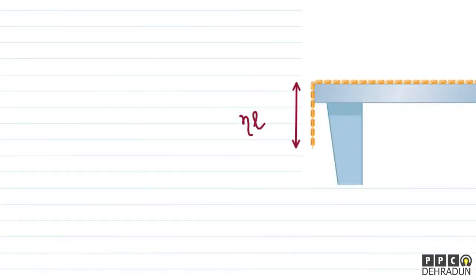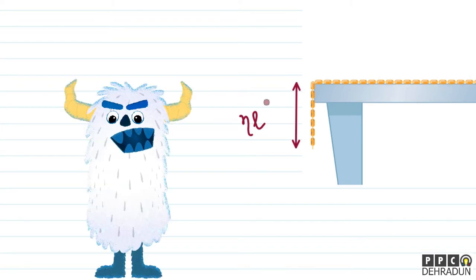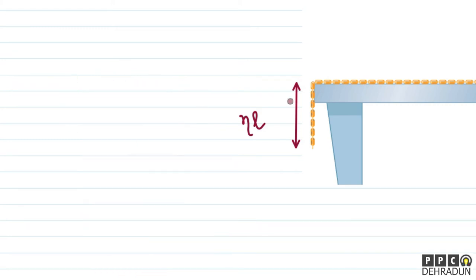इस सवाल को solve करने के लिए हम लोग क्या use करेंगे? हम लोग देख पा रहे हैं कि just जब overhanging portion की length eta L हो जाती है, तो ये पूरा setup slide करना just start करता है। तो physics की भाषा में, अगर ये just move करना शुरू कर रहा है, तो हम कह सकते हैं कि इस moment पर ये आखिरी बार equilibrium में है - इसी का use करने वाले हैं।